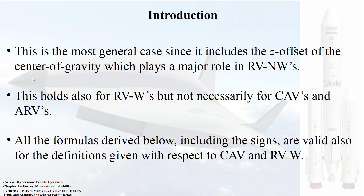One important general case is we will be including the EZ offset in the re-entry vehicle non-winged configuration for the center of gravity point, which is going to play a major role. We will consider the EZ offset — that is, the value from the reference — and calculate the EZ axis distance in the location of the center of gravity point. We can neglect it in CAV by considering that the center of gravity is located along the longitudinal axis, but in non-winged configuration we have to consider the EZ offset because it plays a major role.